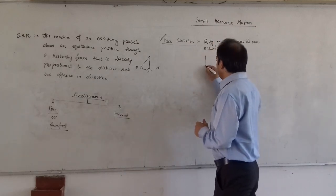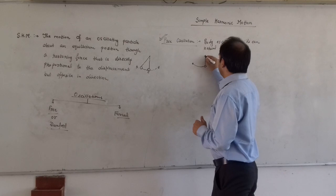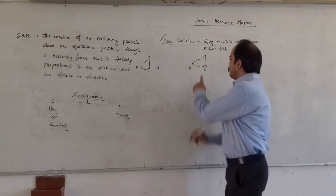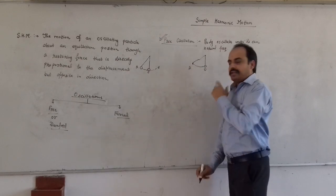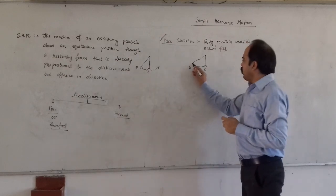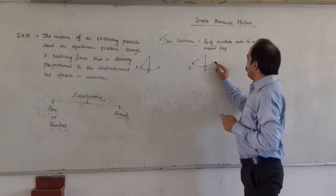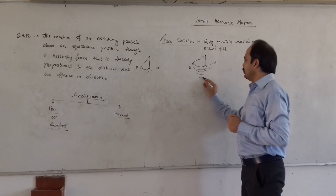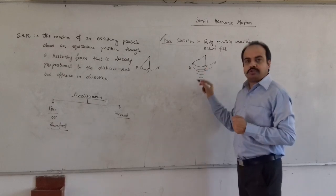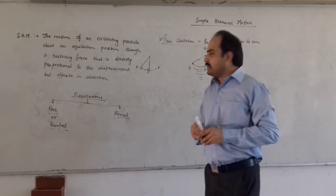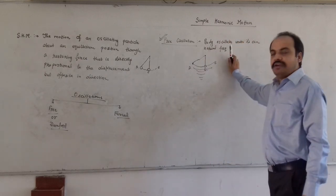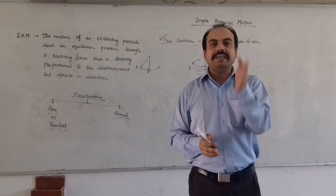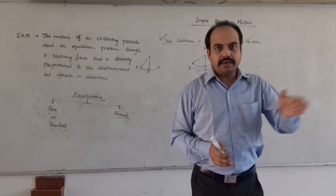If you leave the body from this point — let O be the equilibrium point and we move the body from O to A and release it — then the body will oscillate along A, O, B and the amplitude continuously decreases like this, and finally the body comes to the equilibrium position. Such type of oscillations come under free oscillations, as the amplitude dies out very soon.